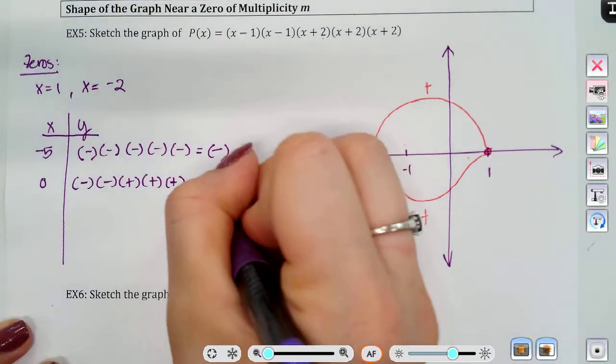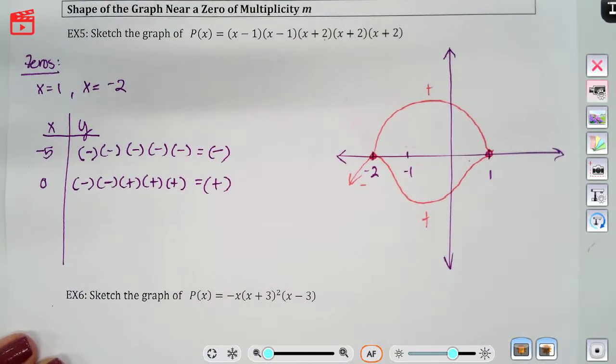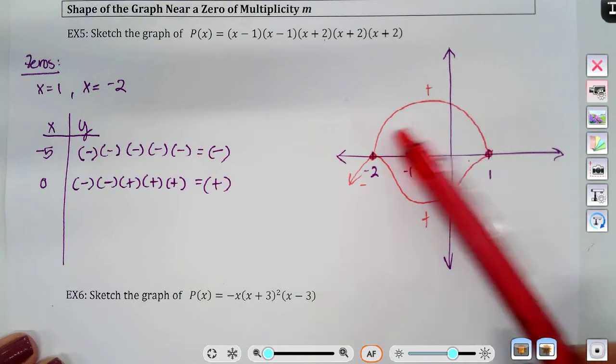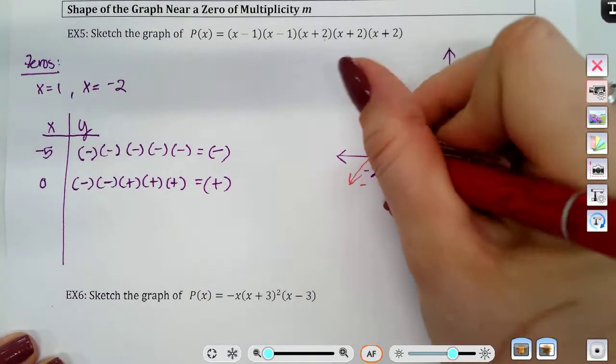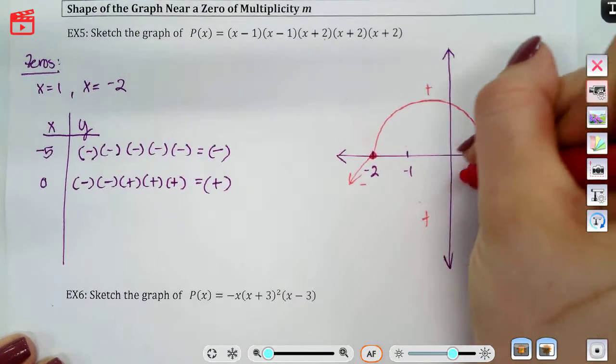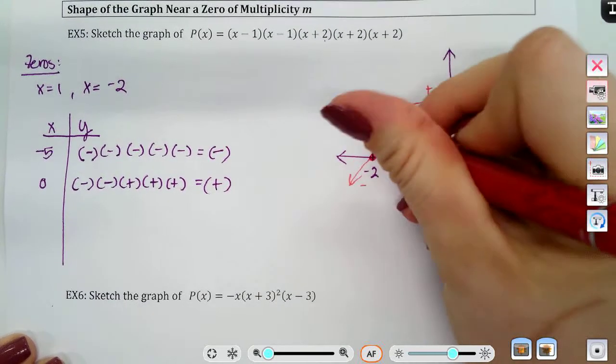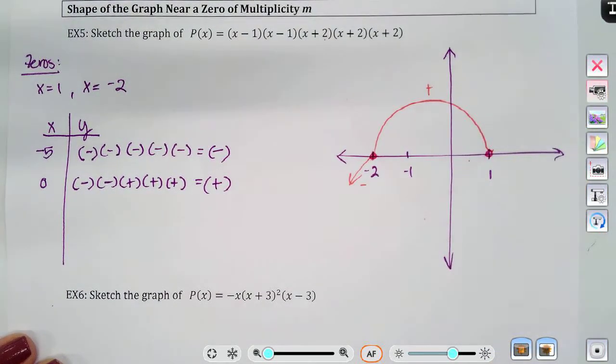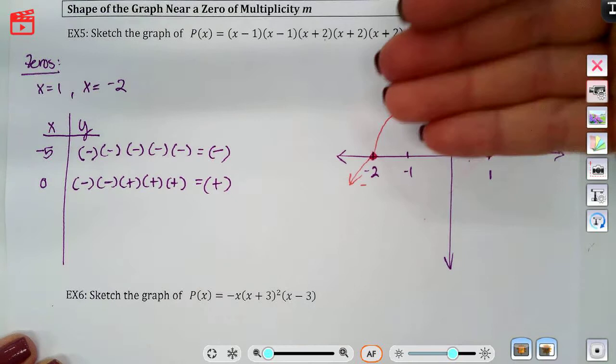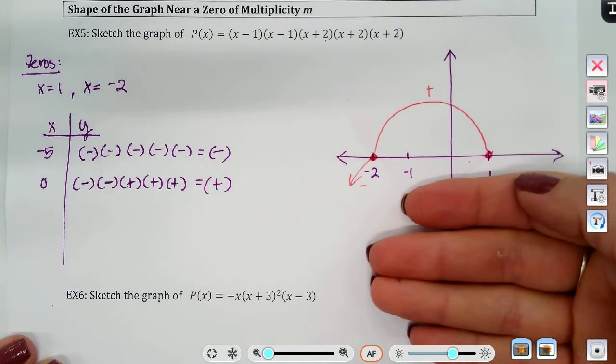When I plug in zero, my end answer would be positive. That means I take the top version. So your graph might look a little different than mine, because remember, we don't know how high or low these loops go. We just know if it's positive above the x-axis, or if it's negative below the x-axis.